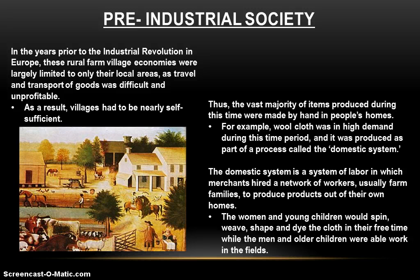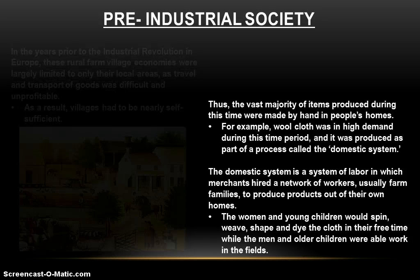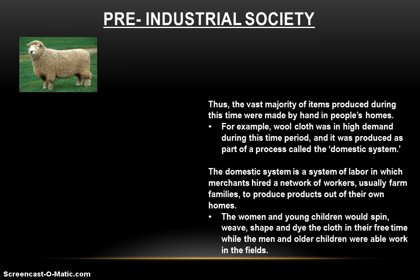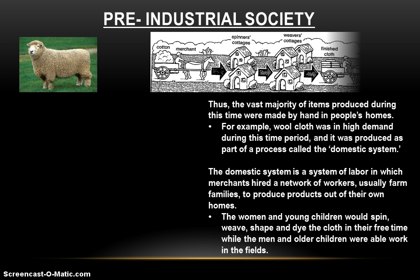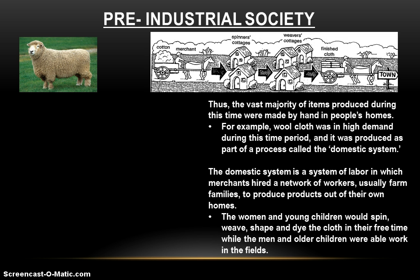Whether it's nails, leather, shoes, or cloth, you're going to have to make it by hand at home. A great example of this is wool, which was in very high demand during this time period, and it was produced as part of a process called the domestic system. Before factories and before industrialization, the domestic system is how products were largely made and produced. The domestic system is a system of labor in which products are made by hand in people's homes.